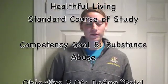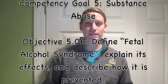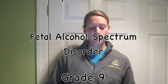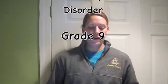Our lesson plan focuses on Goal 5: the learner will choose not to participate in substance abuse. Objective 5.06 is to define fetal alcohol syndrome, explain its effects, and describe how it is prevented. This lesson plan is called Fetal Alcohol Spectrum Disorder, is for Grade 9, and the expectation for students is to identify strategies to minimize potentially dangerous situations. We'll begin with a classroom discussion to review the definition of fetal alcohol spectrum disorder, using an overhead to quickly assess student background knowledge.